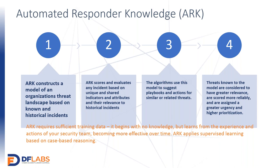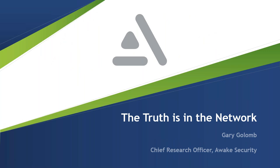Our automated responder knowledge — our machine learning component — serves to inform junior analysts and make processes more efficient. We look at previous responses to incidents: as we build up a knowledge base of what playbooks and actions have been used on previous incidents, InkMan will start to recommend actions. It's a time saver and force multiplier, and helps junior-level staff by automatically suggesting actions taken on previous incidents for future ones. This is completely customizable — the organization can choose attributes most important to them, and it continues to learn as the system progresses. You can check us out at dflabs.com.